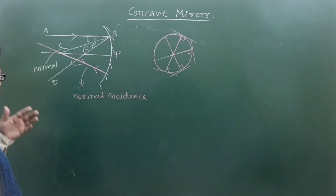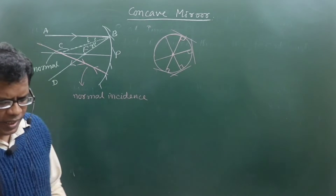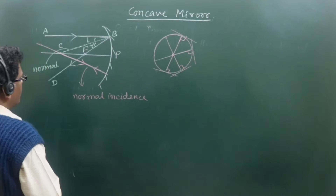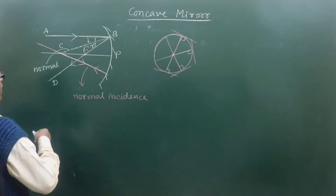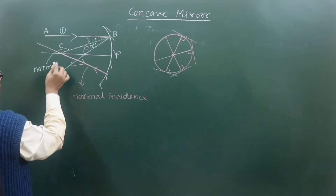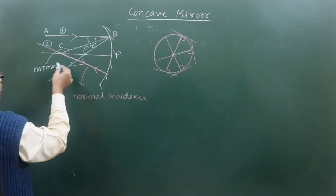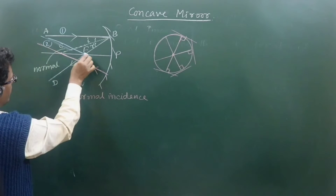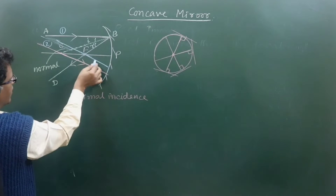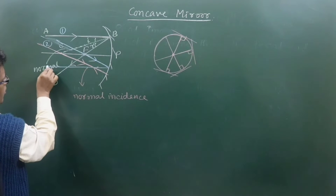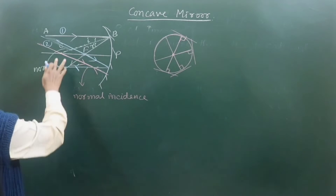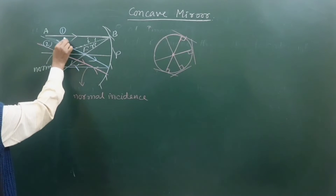That was the second method. The third rule is: any incident ray that itself passes through the focus will, after reflection, travel parallel to the principal axis. This is the reverse of the first rule. So if I send a light ray through the focus of the mirror, after reflection it will pass parallel to the principal axis. This is the third type of ray diagram.